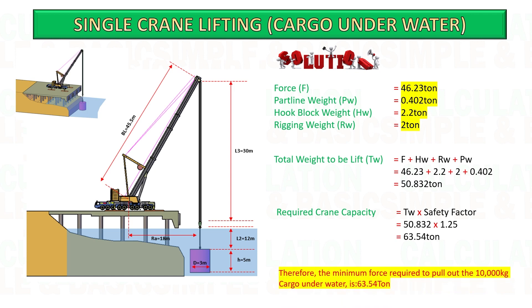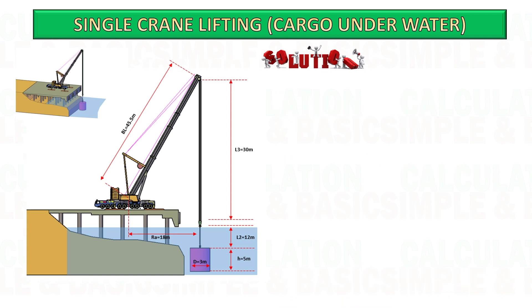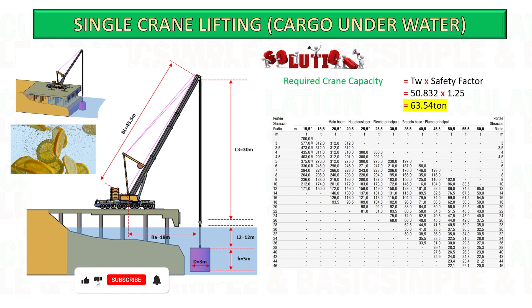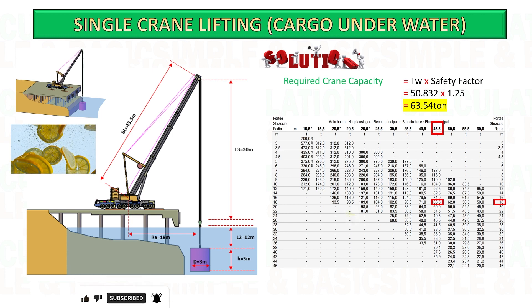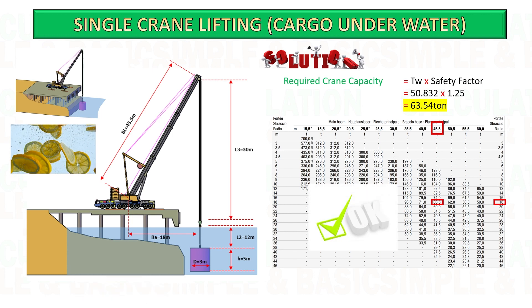Therefore the minimum crane capacity required to pull the cargo under the water is 63.54 ton. Please take note that when cargo is under the water, the weight becomes less due to buoyant force pushing up the cargo. And once it's in the air it's different.